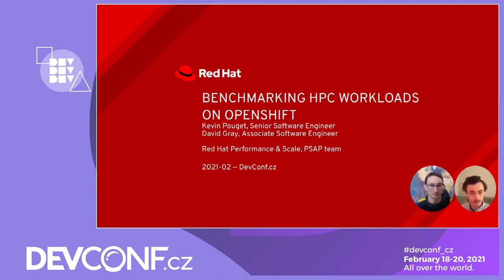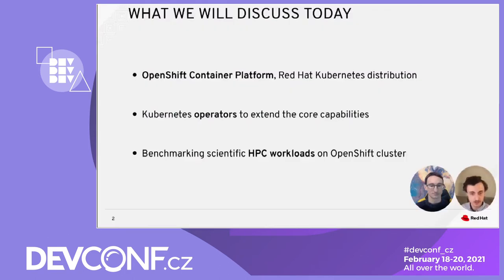In this presentation titled Benchmarking HPC Workloads on OpenShift, we will discuss using OpenShift Container Platform for deploying high-performance computing applications. In particular, we will discuss the Kubernetes operators and tools we used to set up a proof-of-concept of running and benchmarking two scientific applications on OpenShift, and then we will go into the performance results we collected.